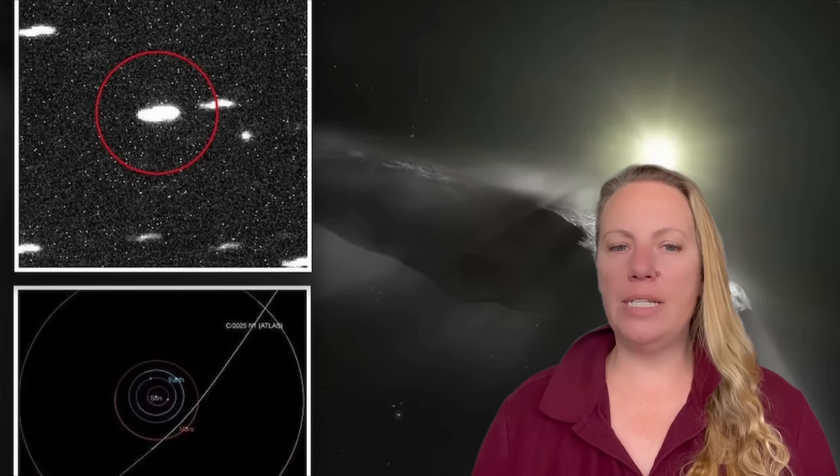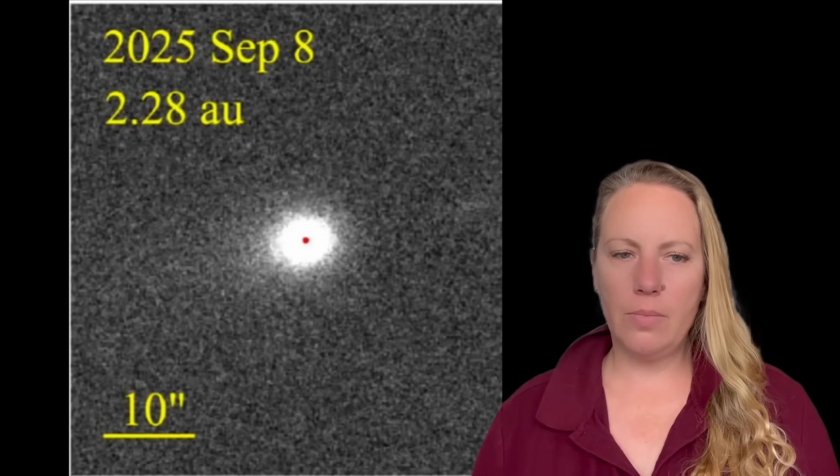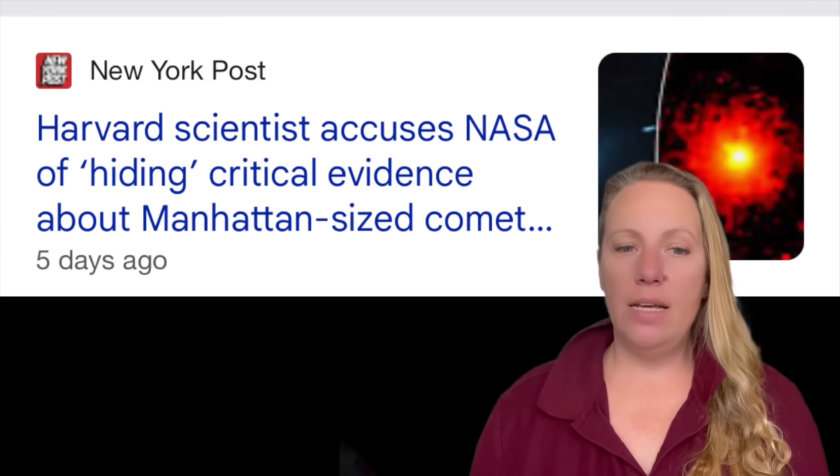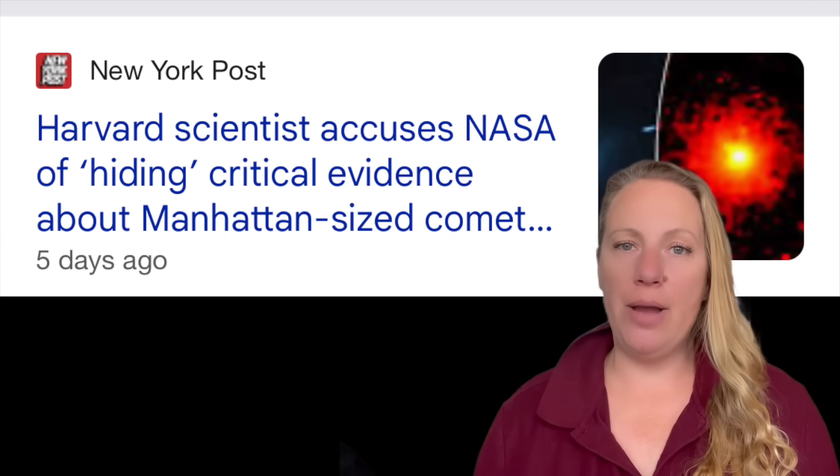For example, the object passed within 30 million kilometers of Mars around early October. And the European Space Agency's Mars orbiters, like Mars Express, ExoMars Trace Gas Orbiter, they planned to capture it. That was early October. We have early November right now. And in some reports on the U.S. side, NASA has declined or delayed to release these ultra-high-definition images from their high-rise telescope.